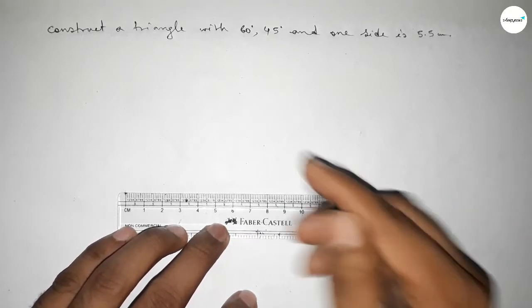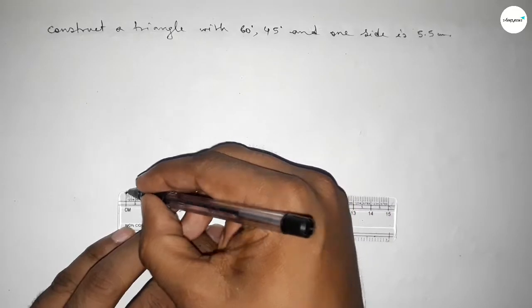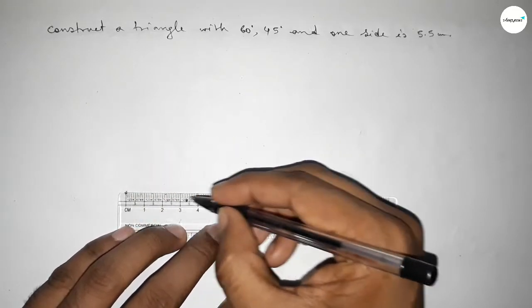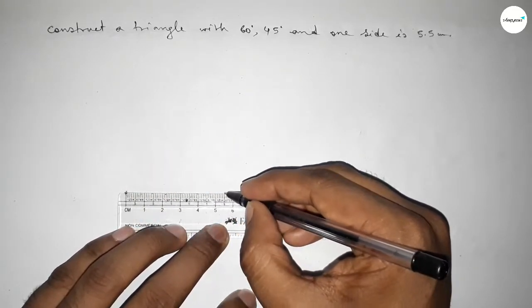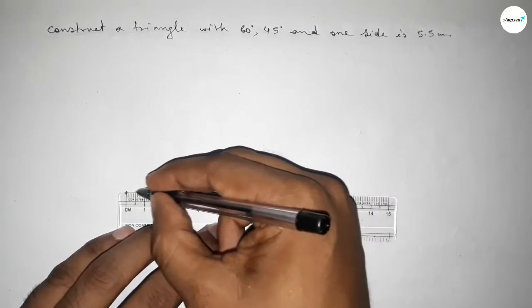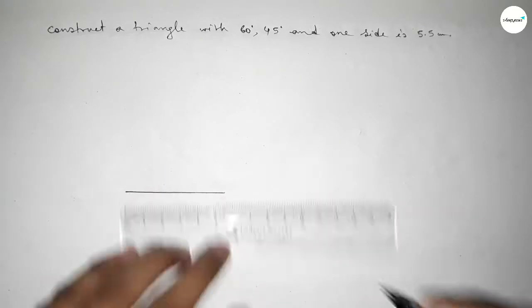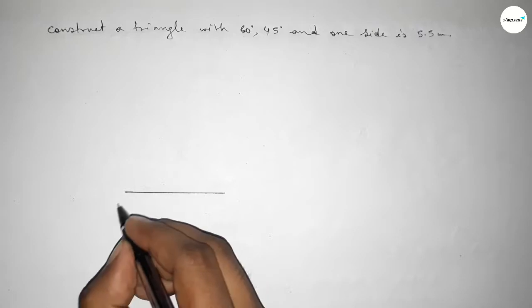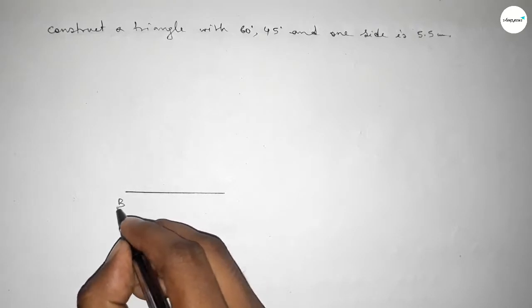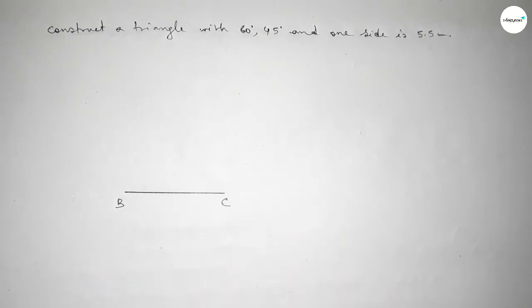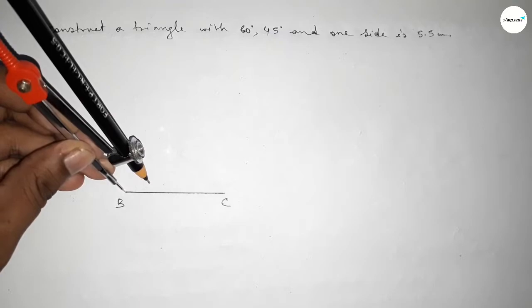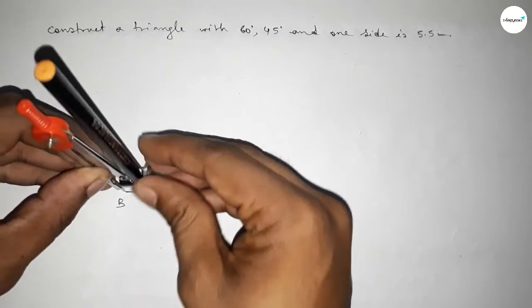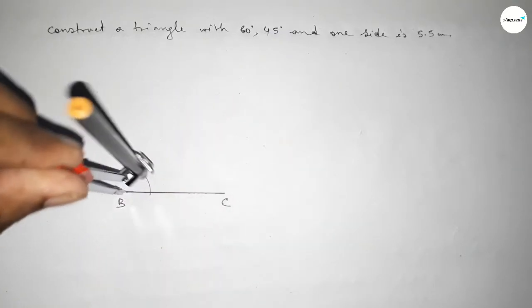First of all, we have to draw a line of length 5.5 centimeters. This is the 5.5 centimeter line, taking point B here and point C here. Now we have to draw a 60 degree angle at point B.